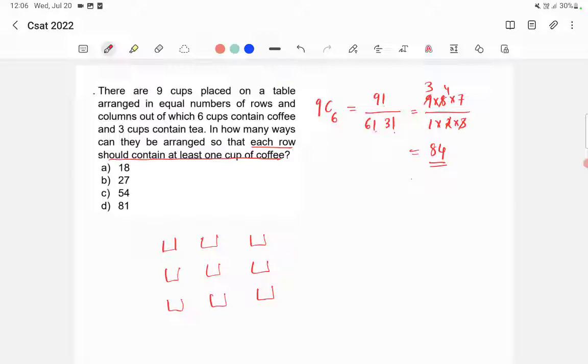Each row will not contain a cup of coffee when all the cups in that row are filled with tea. So if you fill there are three cups containing tea. If you fill this cup with tea, this cup with tea, and this cup with tea, then this row won't contain a coffee. So there is one possibility.